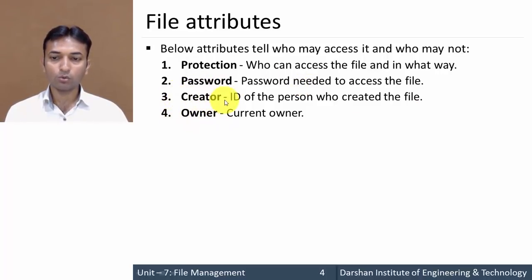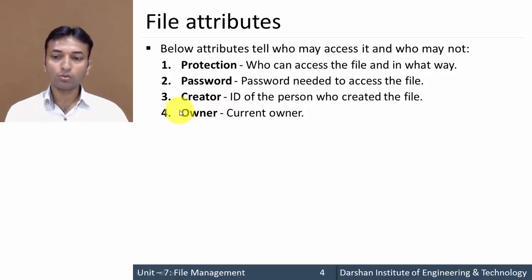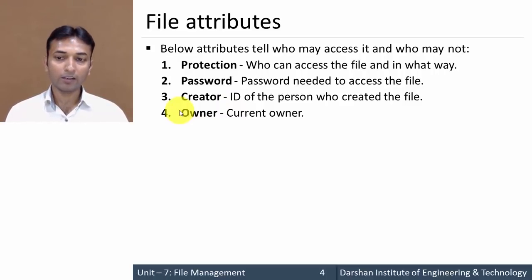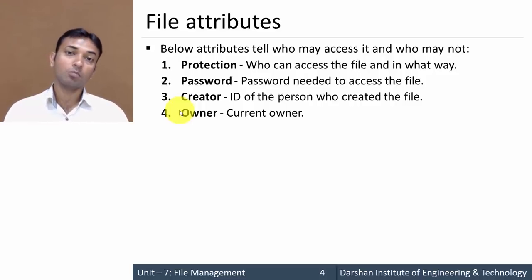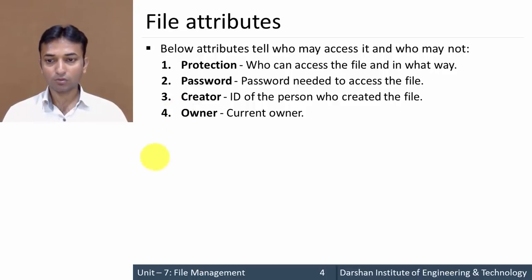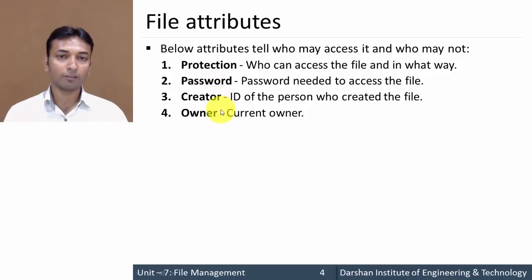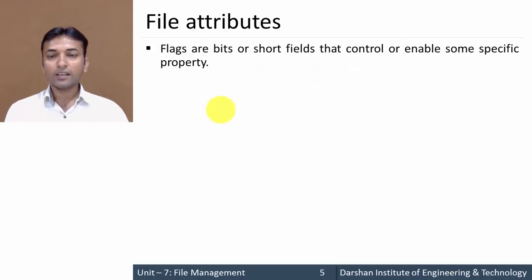The fourth attribute is owner, that is the current owner. The creator and owner differ: the creator is the user who originally created the file, while the owner is the current owner of the file. It is possible that at creation the creator is also the owner, but that ownership may be passed to another user, so the owner may change over time.